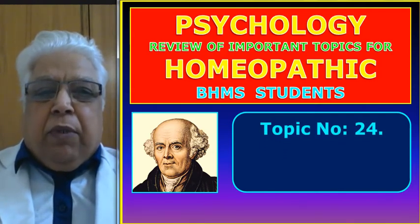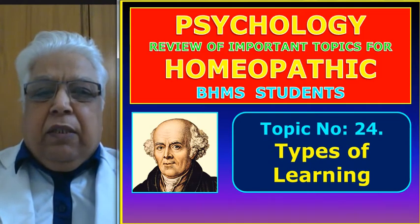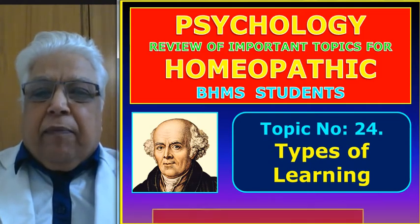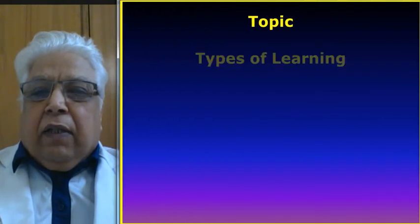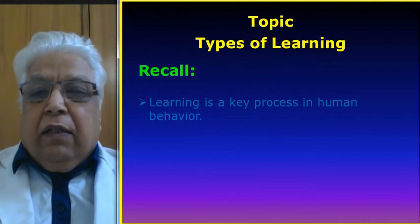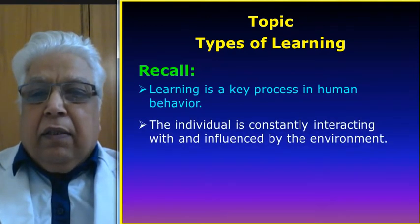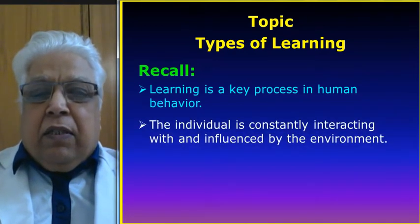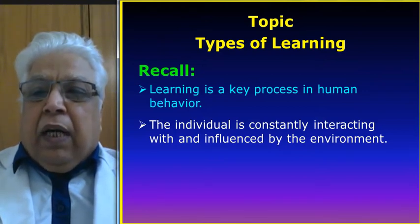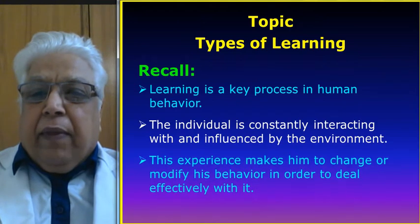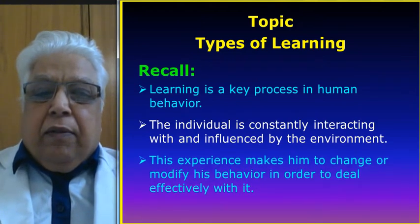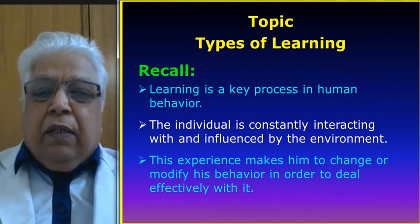This topic number 24 deals with types of learning. Learning is a key process in human behaviour. The individual is constantly interacting with and influenced by the environment in which we are living. This experience makes him change or modify his behaviour in order to deal effectively with it.